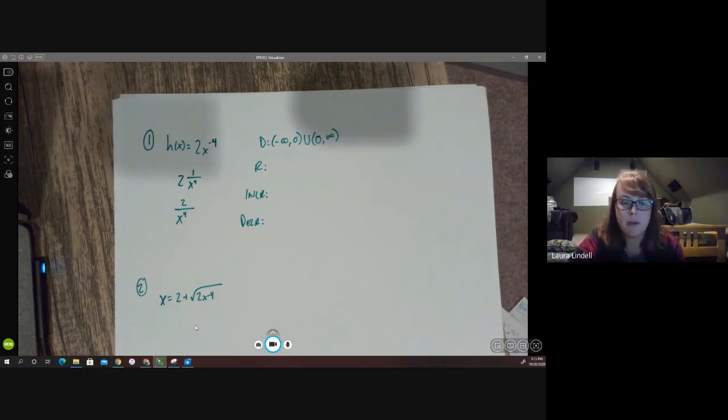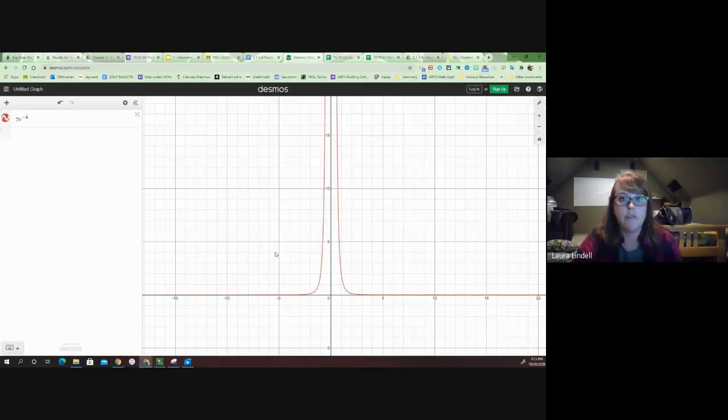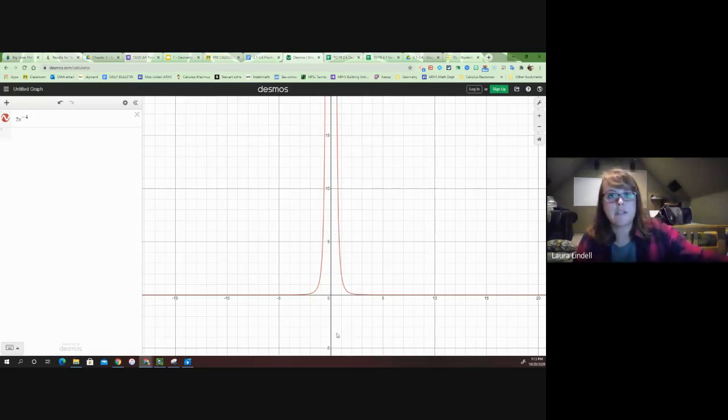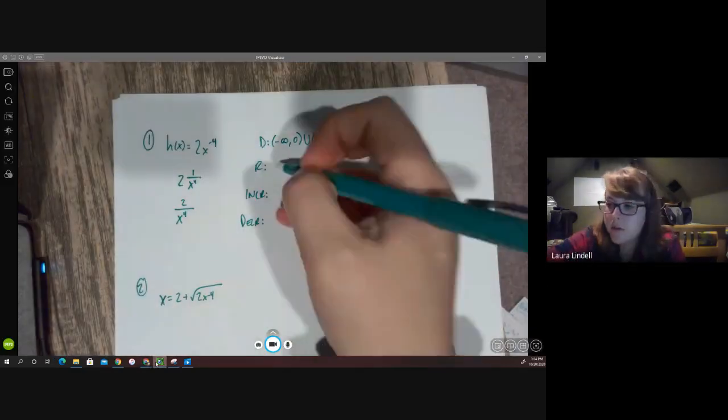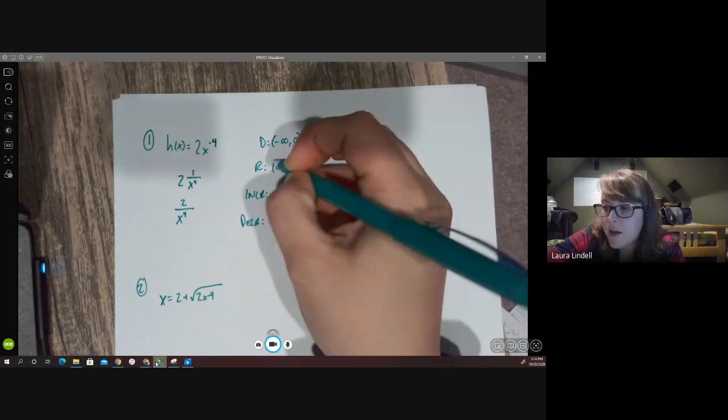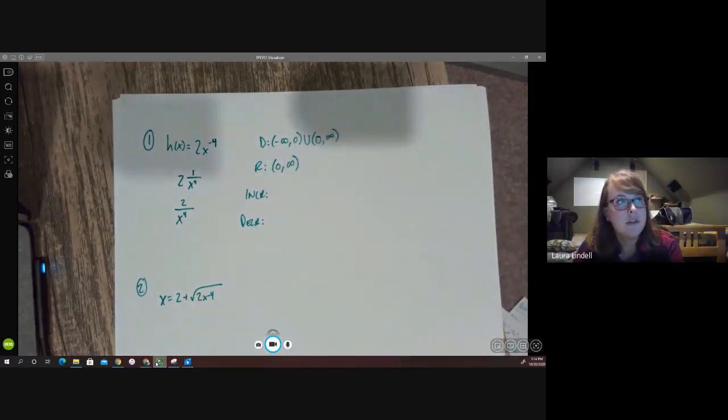So that's one thing that we could be thinking about when we start talking about range here, just from looking at the function itself. And then when we go to look at the graph, it turns out our assumption, our hypothesis, is correct. We have an asymptote at zero. It gets very, very close to zero, but never actually gets there. And it goes up to positive infinity. And there's nothing down below the x-axis here. So our range turns out to be zero to positive infinity, not including zero.